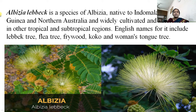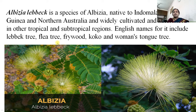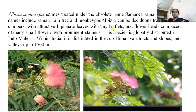Albizia lebbeck: this plant has green-colored inflorescence, and another species has red and pink colored inflorescence as well. Albizia saman is an ornamental plant grown in the garden for its beautiful pink-colored inflorescence. It is also bipinnate and distributed all over our country.